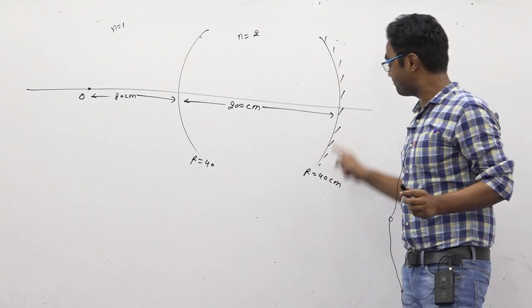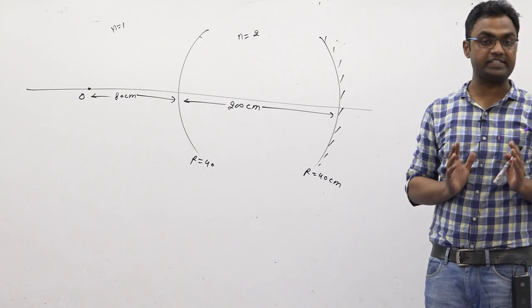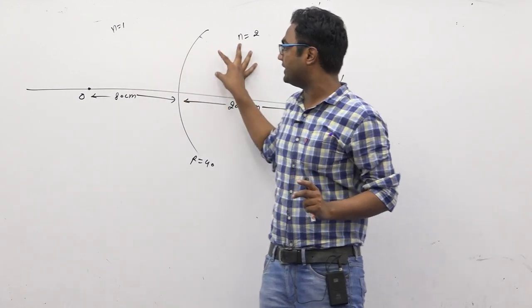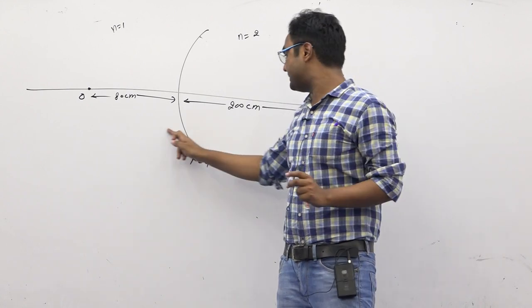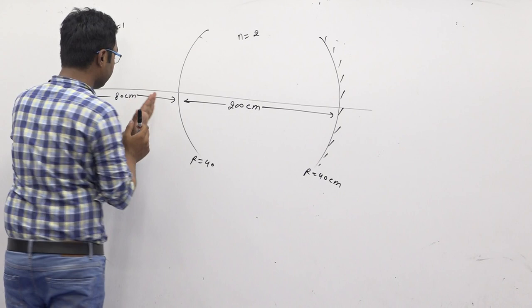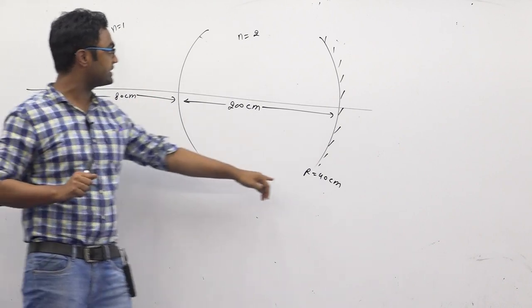This question is about a mirror with radius of curvature 40 cm. At this boundary, this is n equal to 1 and this is n equal to 2. These two media are given 200 cm apart, and here is an object at 80 cm. This is r equals 40 and this is r equals 40.